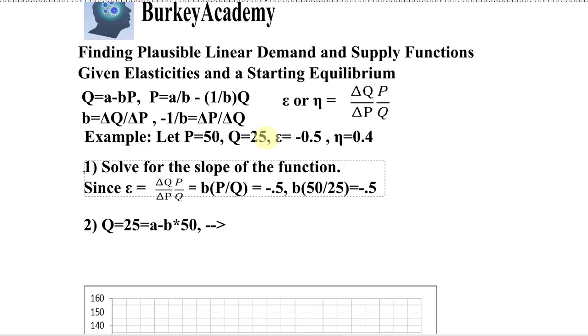So we know that b times 50 over 25, which is just 2, has to equal minus 0.5. So what that tells us is that the slope, if we solve for it there, has got to be, let's remember that's just 2, divide both sides of this equation, 2 times b equals minus 0.5, divide both sides by 2, and you get that the slope here is minus 0.25 for the demand equation.